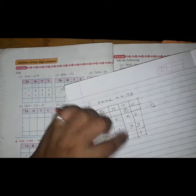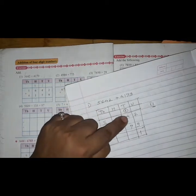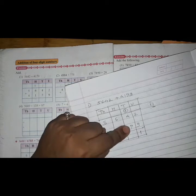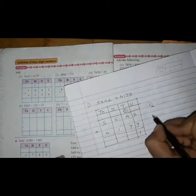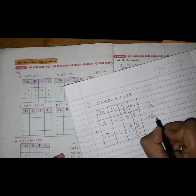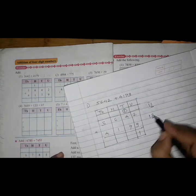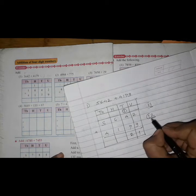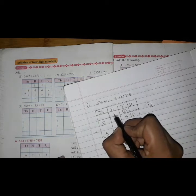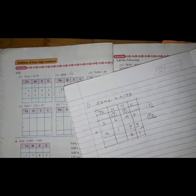Now add this: 1 plus 4 plus 7. 1 plus 4 is 5, and 5 plus 7 is 12. Here is 2 at units place, so we will write 2 here, and this 1 will be carried over here at the hundreds place.